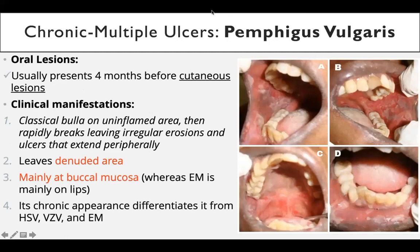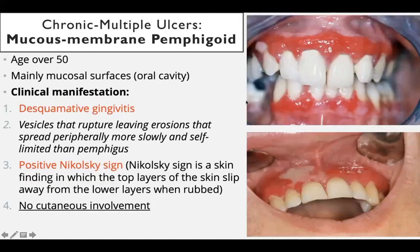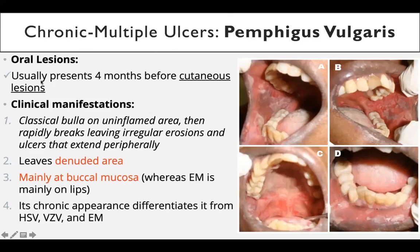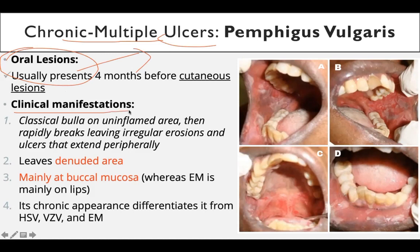The first one we are going to is pemphigus vulgaris. On the right side you can see the buccinator internal mucous membrane — so why is this mucous membrane pemphigoid? Let's see. It usually presents four months before cutaneous lesions. So before the appearance of lesions on the skin, these oral lesions are present — that's why we are targeting oral lesions in stomatology.